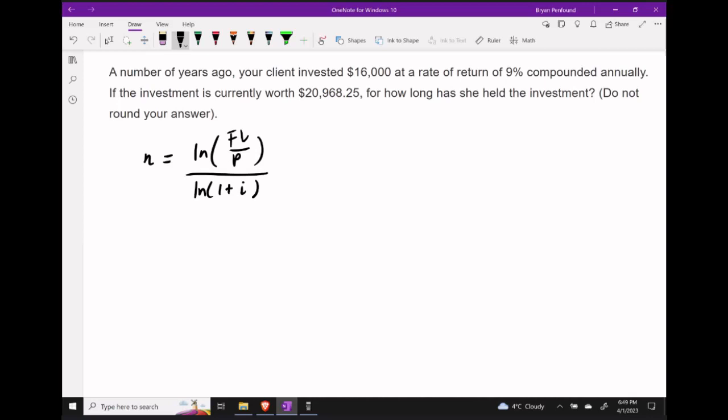Well, here we should be able to apply our formula for N and calculate the number of compounding periods that the investment has gone through. Filling in our future value, principal amount, and periodic interest rate of 9% compounded annually, we get the following.